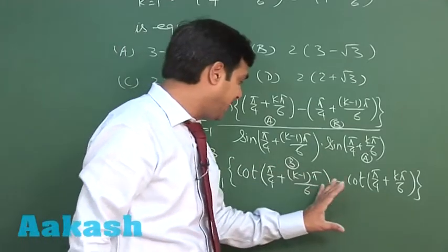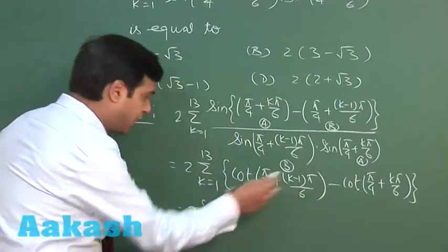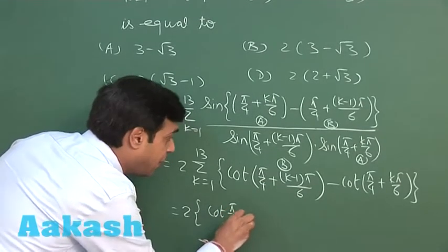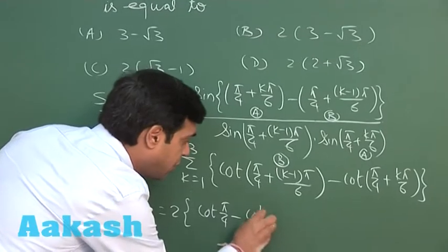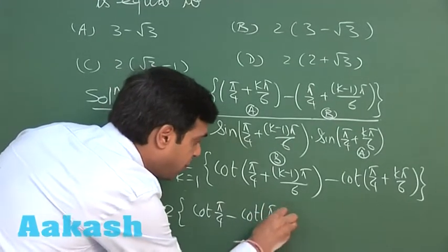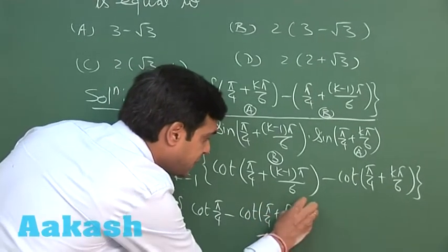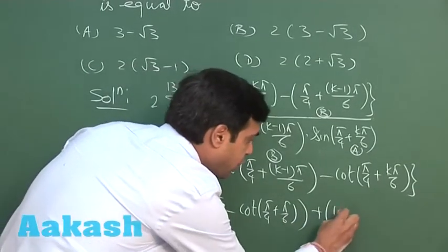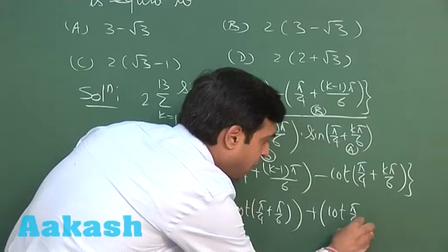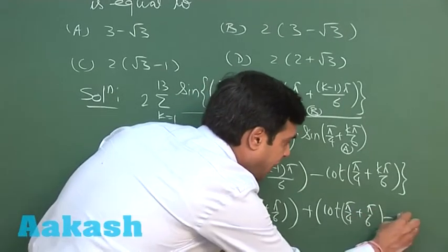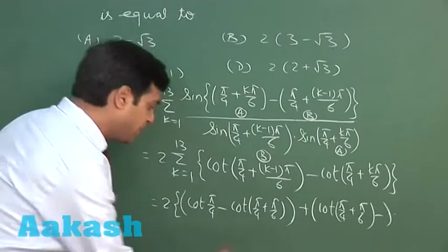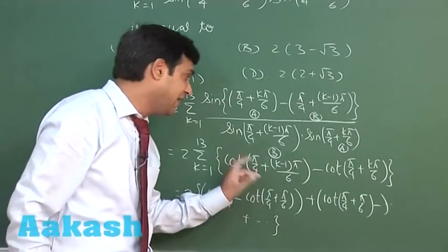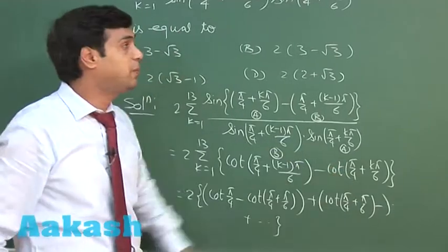Twice, so on substituting k equals 1 to 13, we can see the terms obtained as cot(π/4) minus cot(π/4 + π/6) plus cot(π/4 + π/6) minus... and so on. So similar terms would be going on. We can see that the first term from here and the last term from here would be the remaining two.